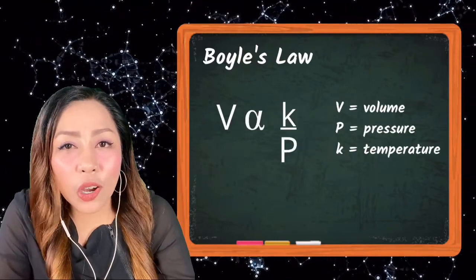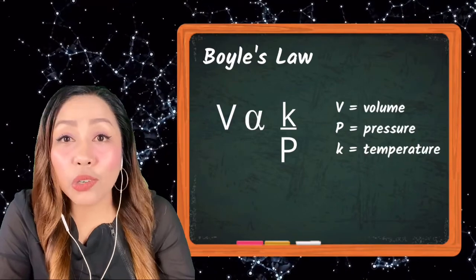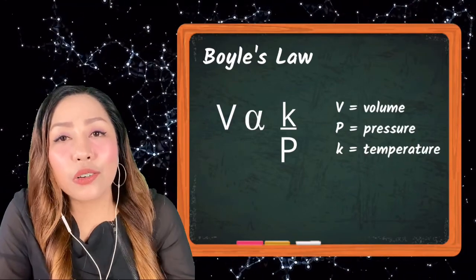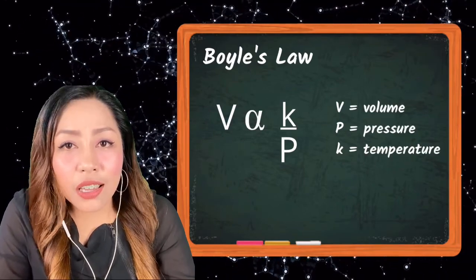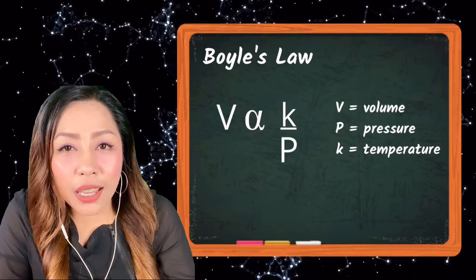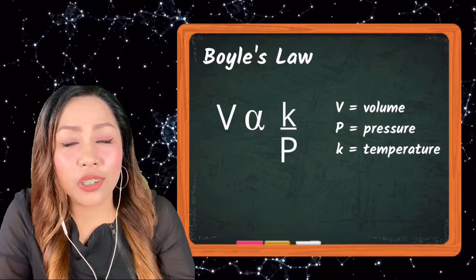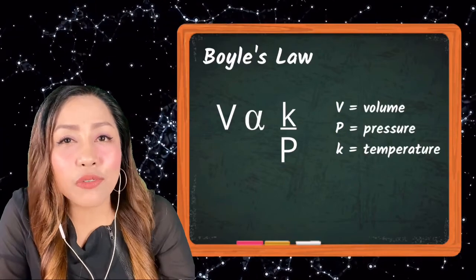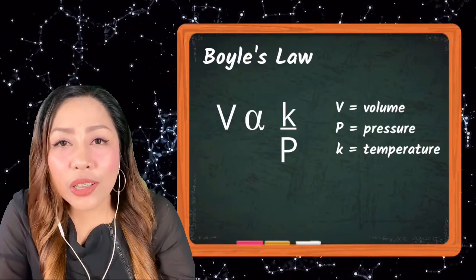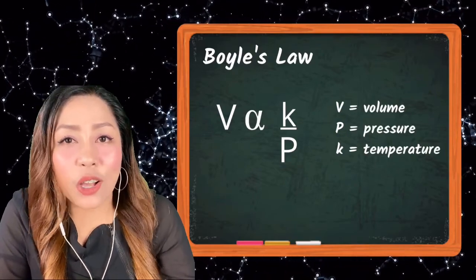To put this law in an equation, we will be using symbols. First, we will be writing V to represent volume, and P to represent pressure. K stands for constant, and for Boyle's Law, temperature is constant.